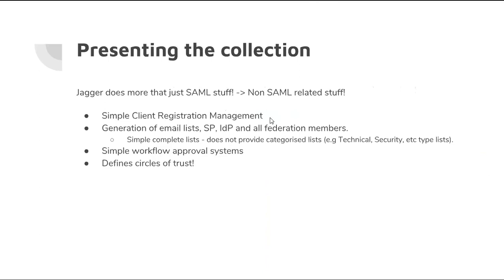Jagger also does more than just SAML stuff — it does some non-SAML related things. It provides a simple client registration management tool, effectively a simple CRM. It allows you to generate email lists for all contacts — both service providers and identity providers — though these are simple lists that don't provide categories for technical or security contacts. It also provides a simple workflow approval system and allows you to define circles of trust — different groups of entities that work together.